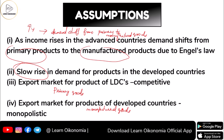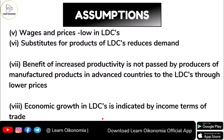The export market of developed countries is considered to be monopolistic — meaning a single seller. In LDCs or underdeveloped economies, wages and prices are very low. Additionally, substitutes for products of LDCs reduce demand further — when the number of substitutes increases, it leads to a fall in the demand for the commodity in question.